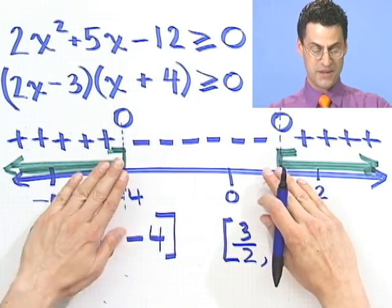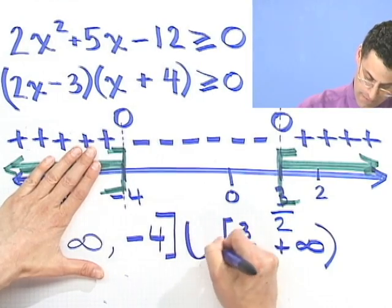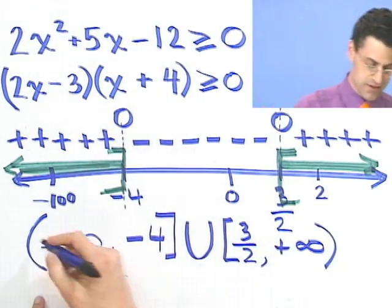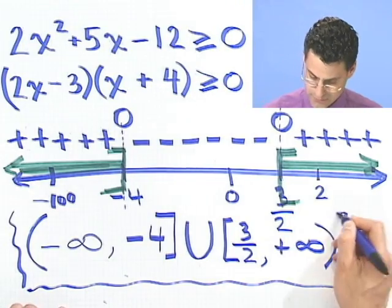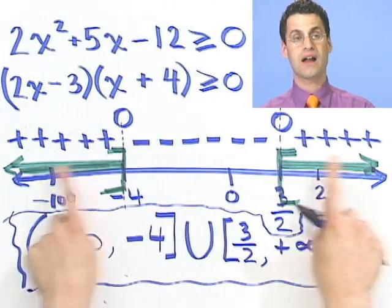And then, since I'm taking one or the other, I take their union. So this is how to write the answer in interval notation. And this is how to write the answer sort of graphically.